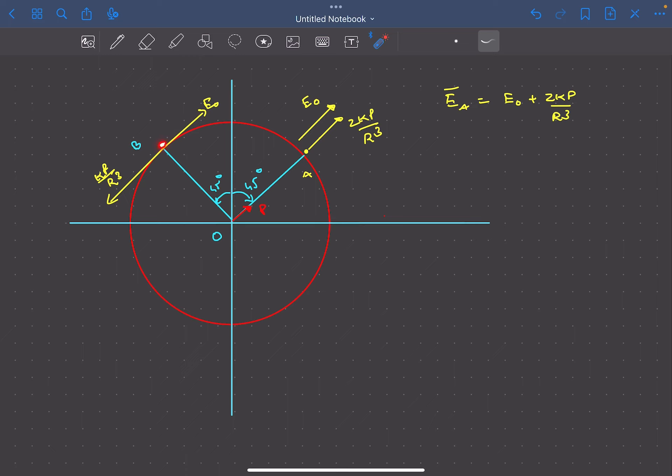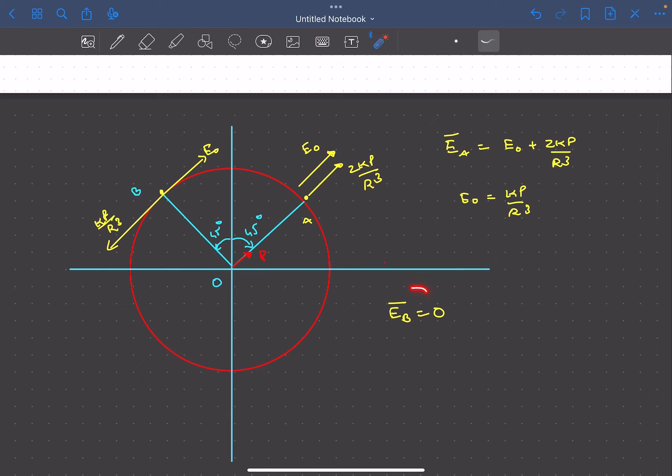The net electric field at point B must be perpendicular to the surface, which means the tangential components must add up to zero. Therefore, E₀ = kp/R³, which means the net electric field at point B must be zero.